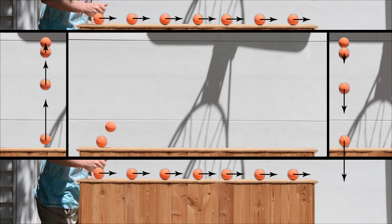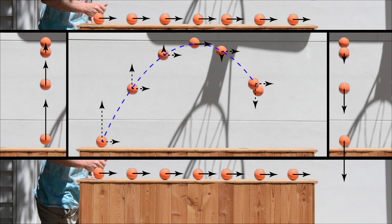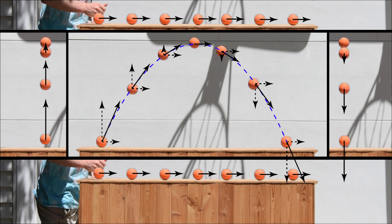Now let's take a look at projectile motion. Remember, projectile motion is a combination of the horizontal and the vertical components. So we can now take those horizontal and vertical velocity vectors and add them to the projectile motion video. Those velocity vectors are the x and y components of the resultant projectile motion velocity vectors, which we can now add to the video. And there are all the velocity vectors for projectile motion.